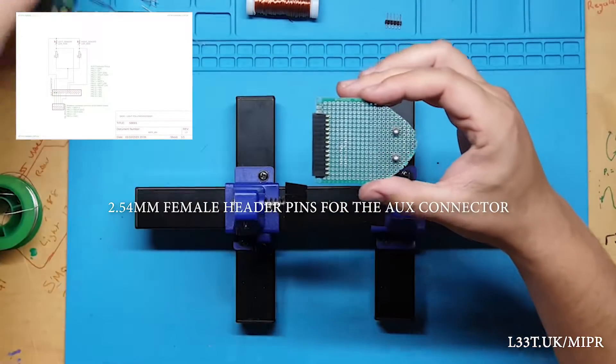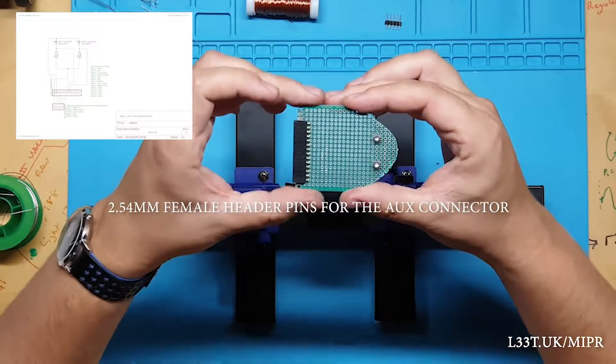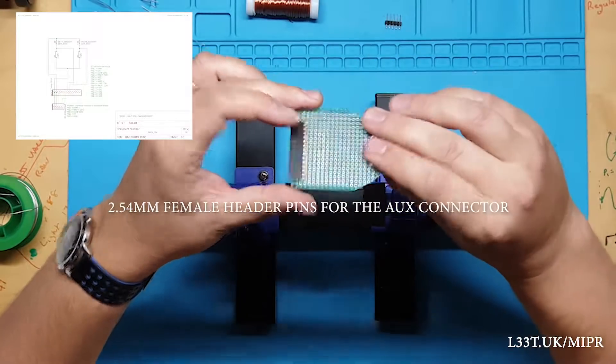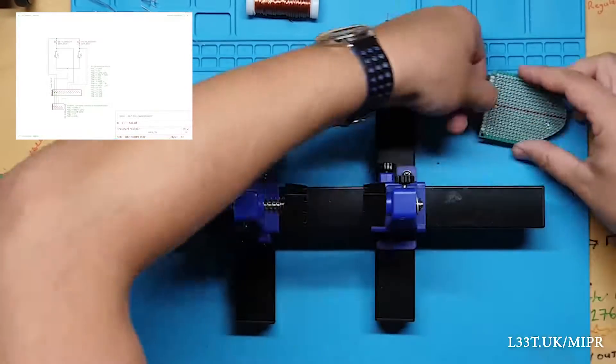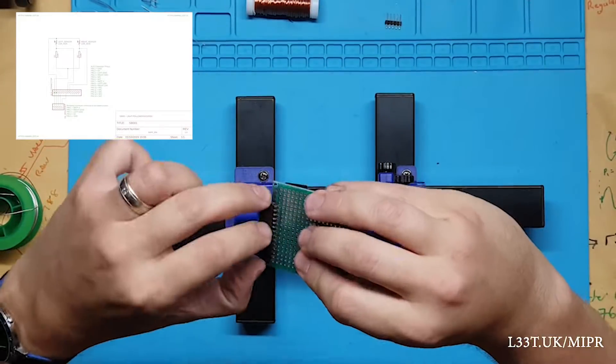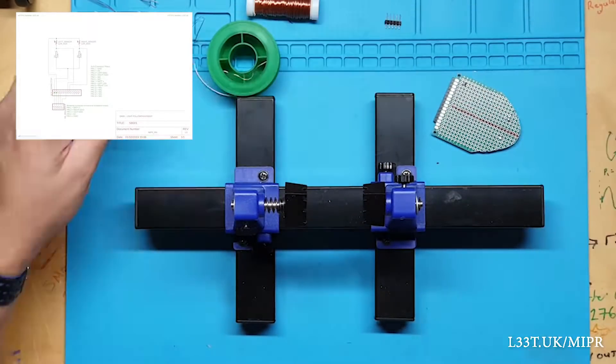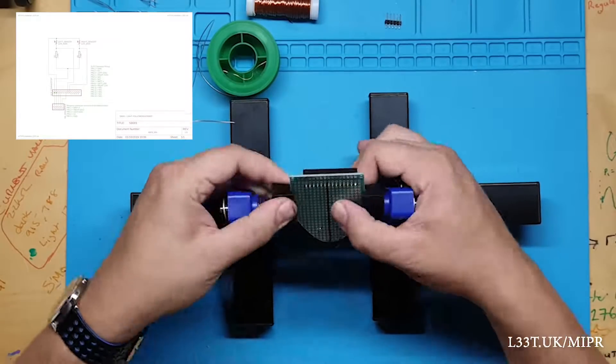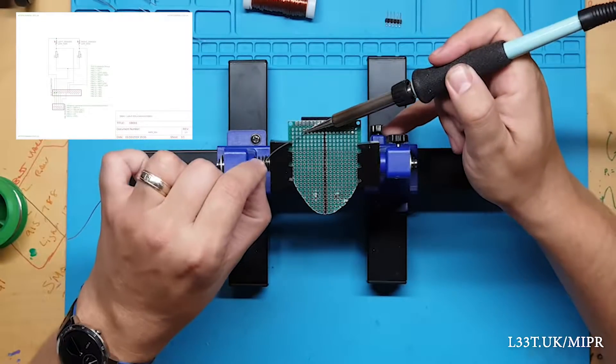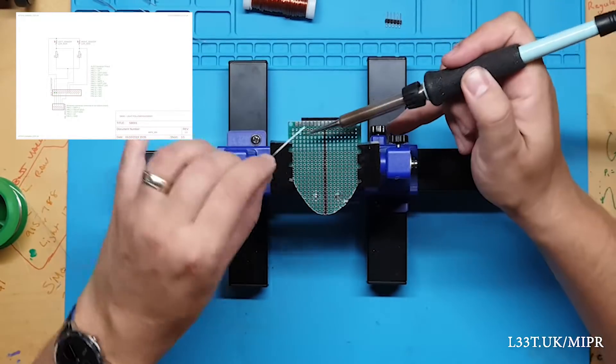I will first add the auxiliary connector so we can connect the sensor board to Mipper. The auxiliary connector contains 14 pins and will carry all data to and from the sensor board. It also carries 5 volts and ground.